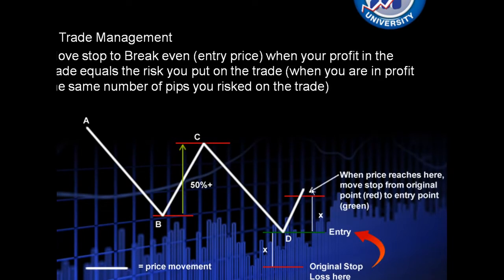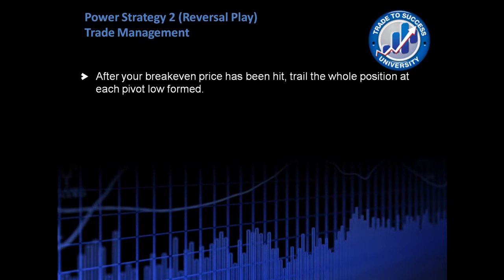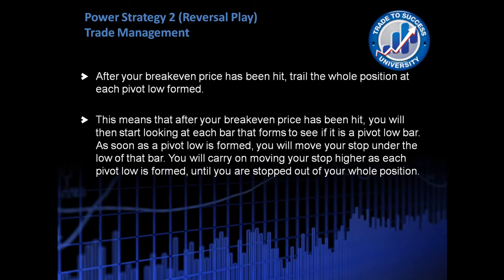When price reaches the red point, which is X amount of pips — and remember X represents the number of pips between your entry and your stop — so when we're in profit by X amount of pips, we move our stop from the original point, which is the red line, to the entry point, which is the green line. After your break even price has been hit, you trail the whole position at each pivot low formed. We're talking about long trades right now. So after break even is hit, you start looking at each bar that forms to see if it is a pivot low bar. As soon as a pivot low bar is formed, you move your stop under the low of that bar. You carry on moving your stop higher as each pivot low is formed until you are stopped out of your whole position.